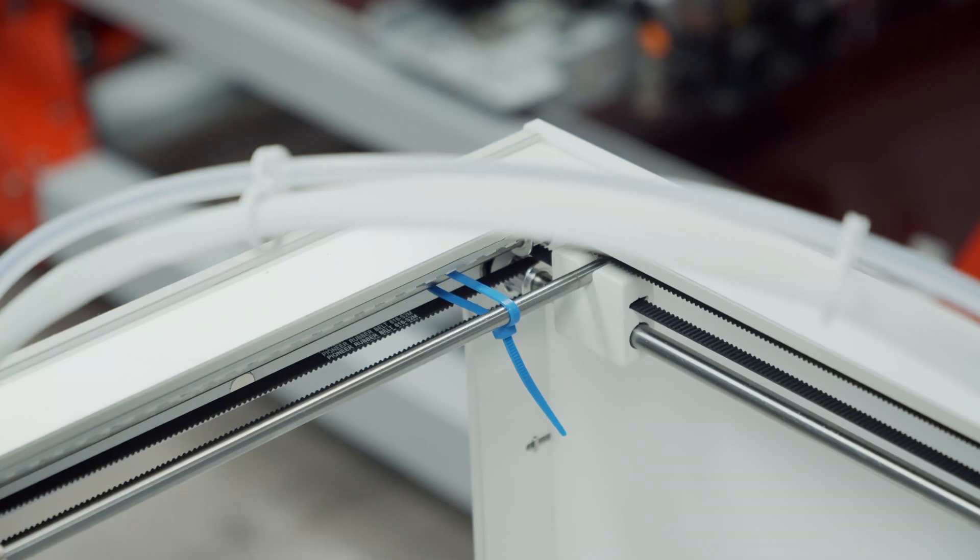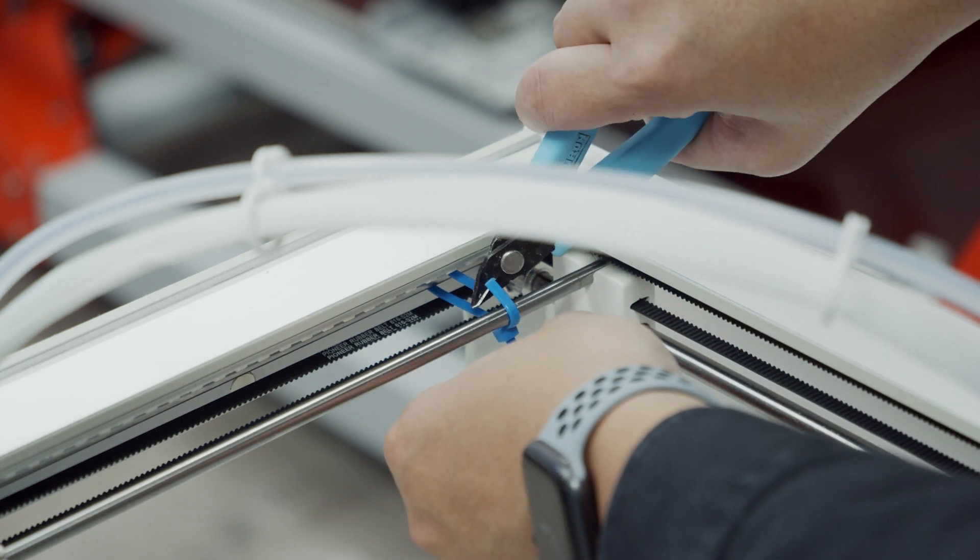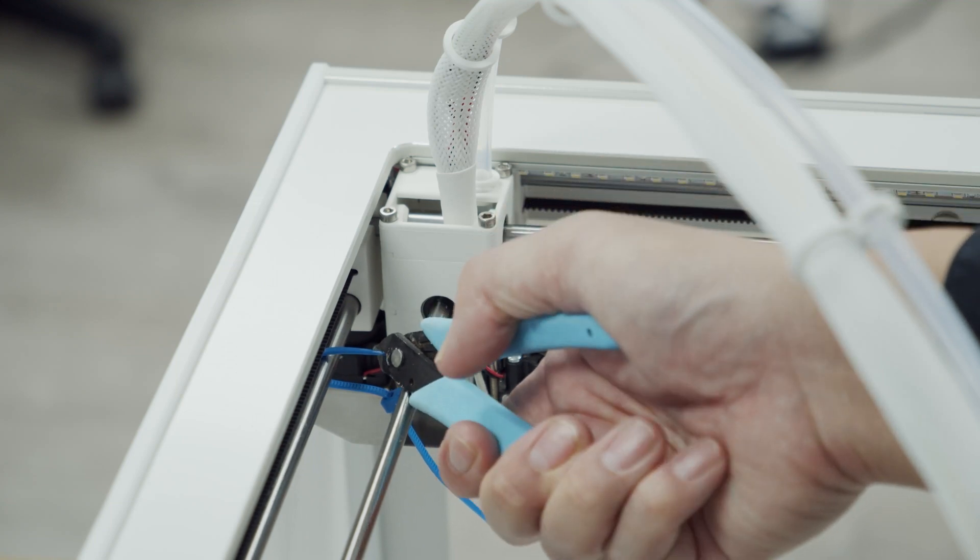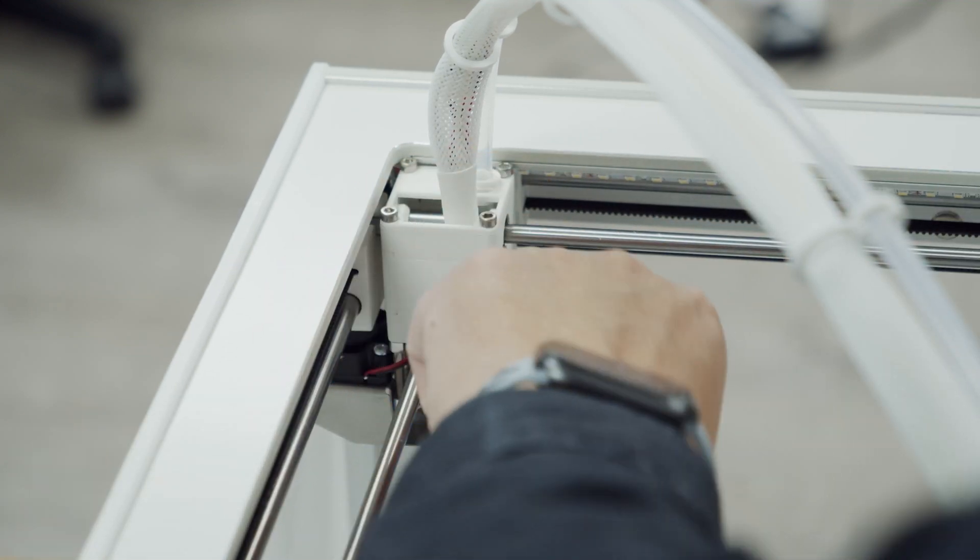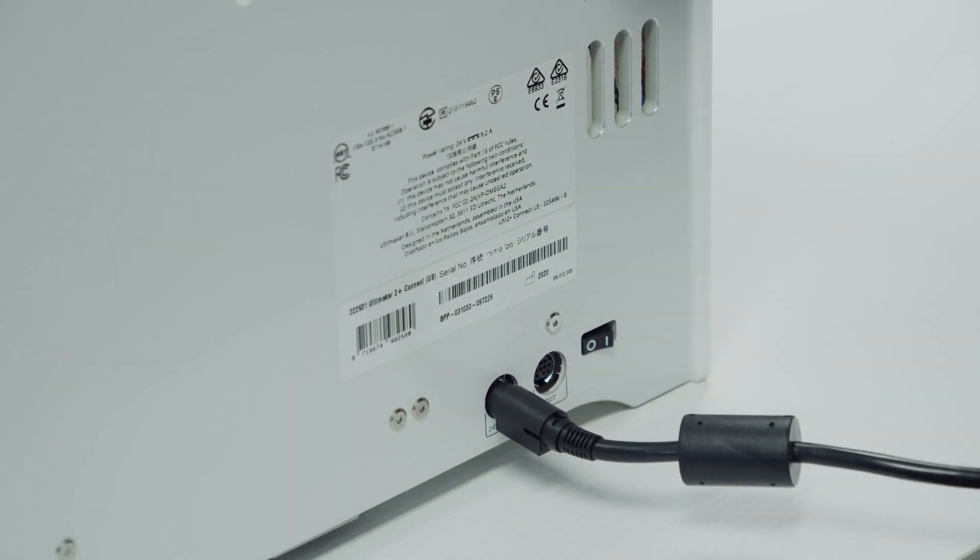Now we begin setting up the printer. To start, there are blue zip ties around the X and Y axis rods holding the print head in place. Cut these before you turn your printer on, just in case it tries to move. After you do that, you can plug the printer in and turn it on.